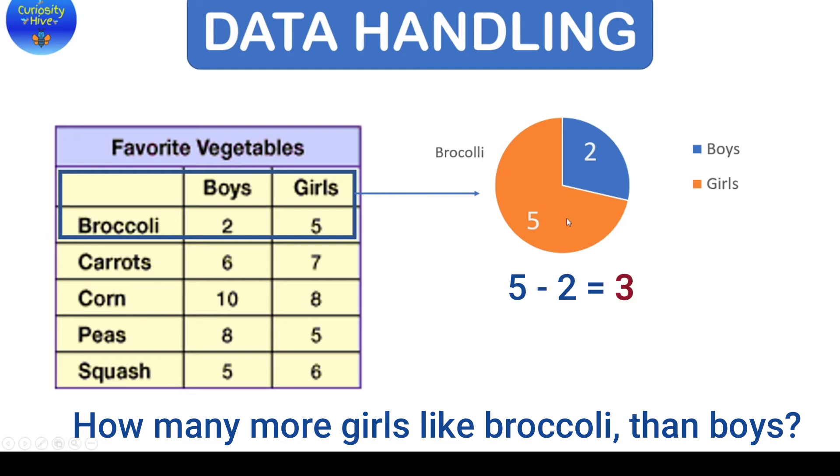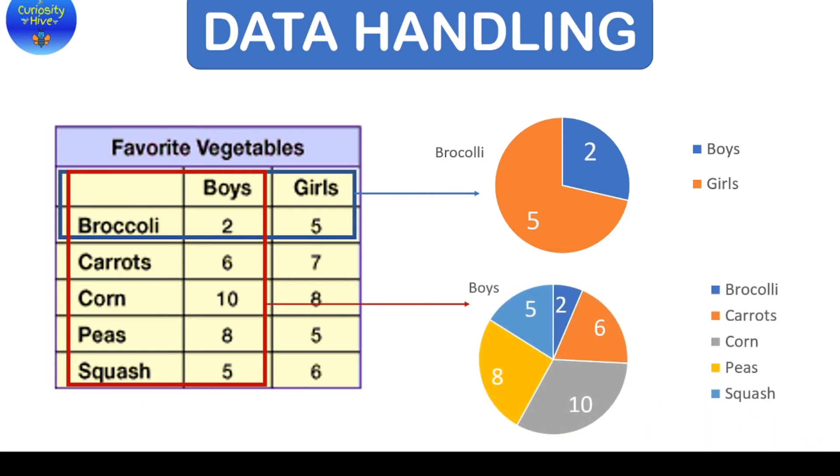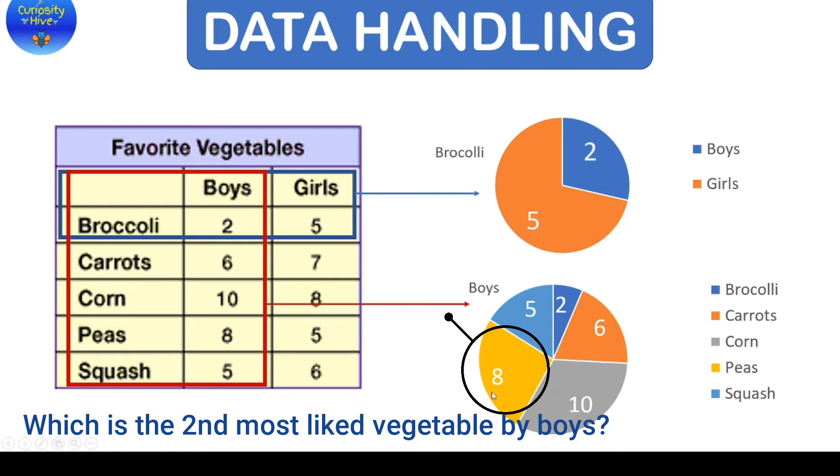Similarly, the information such as this which gives us the boys and their likings for vegetable can also be depicted as a pie chart such as this. So, you would probably get only this as the question. From here, you have to plot the tabular information and then you can answer the questions. Now, the question here that could be is which is the second most liked vegetable by boys? Well, here you just look at the pie and the second biggest section is that of the yellow one which indicates peas. So, your answer would be peas. So, this is how you would resolve to answering the questions.